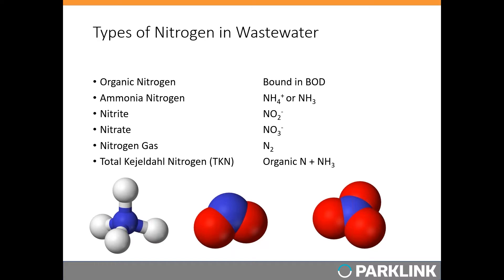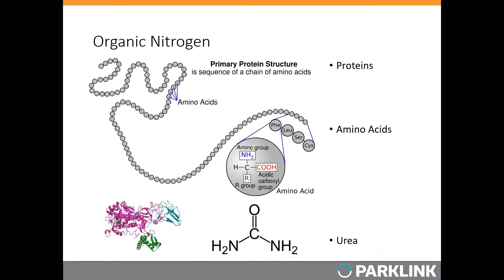TKN, or Total Kjeldahl Nitrogen, is one common measurement used in wastewater — it's the sum of organic nitrogen plus ammonia nitrogen. Looking at the molecules from left to right: ammonium or ammonia (ammonium has four hydrogens; remove one hydrogen and that's ammonia), then nitrite in the middle, and nitrate on the far right. These three forms make up the inorganic nitrogen in wastewater.